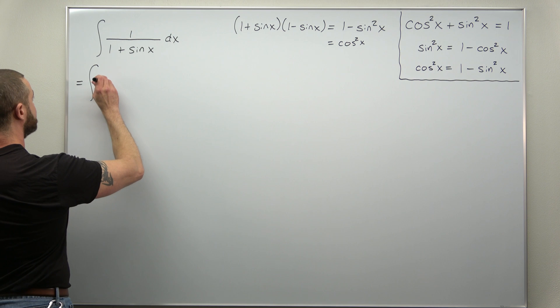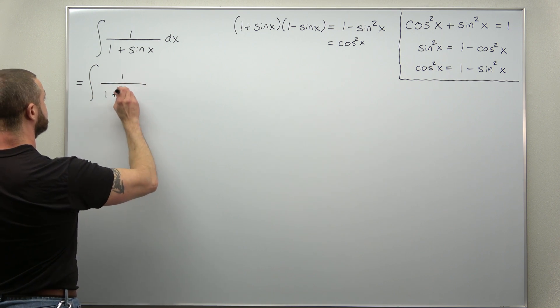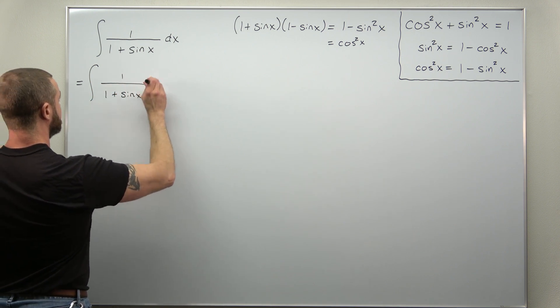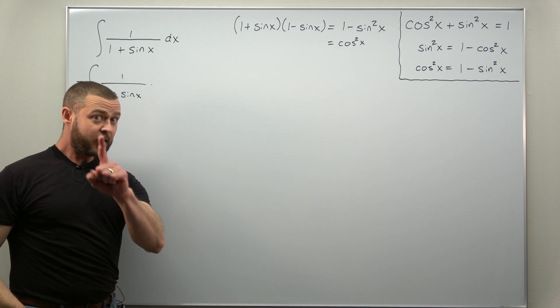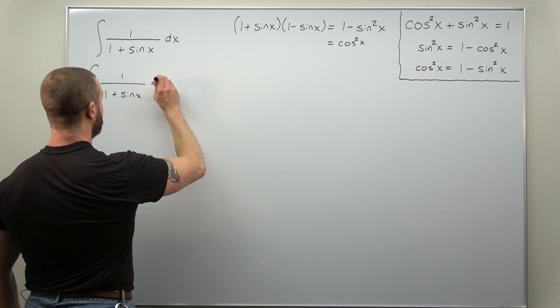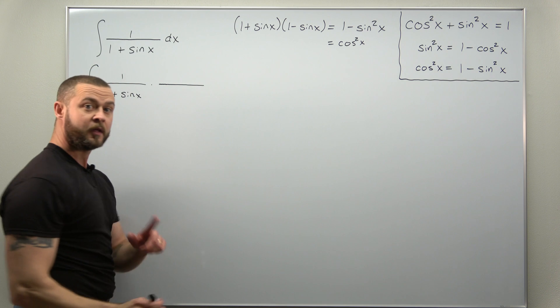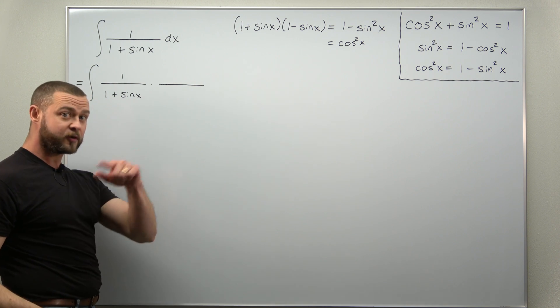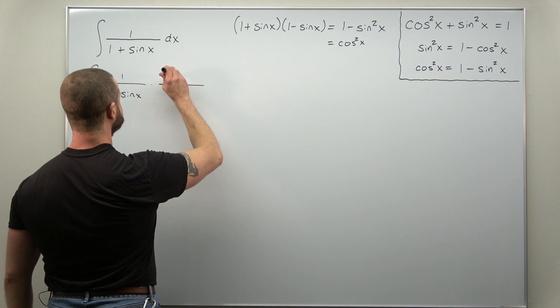We have our original integral, and we're going to multiply by 1 in the form of a quantity over itself, and the quantity over itself that we'll be using is 1 minus sine of x.